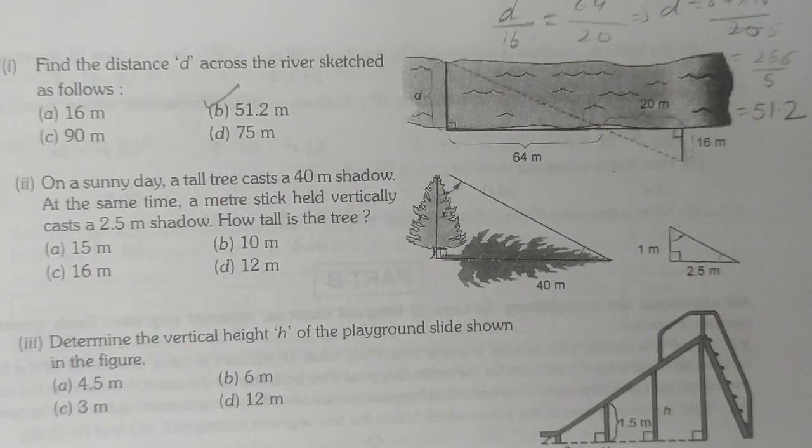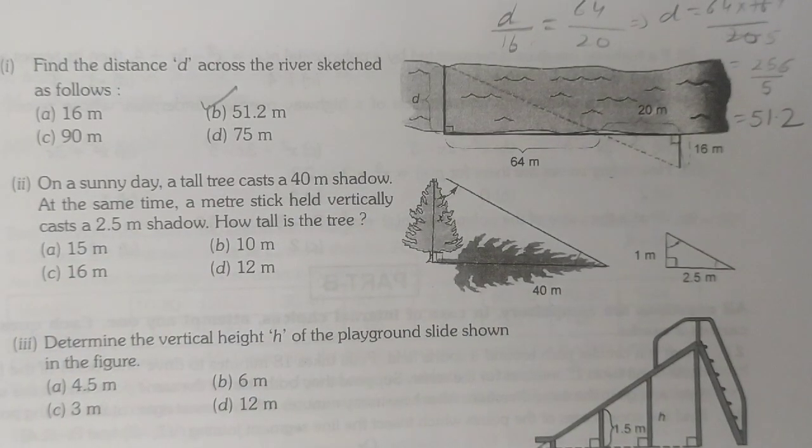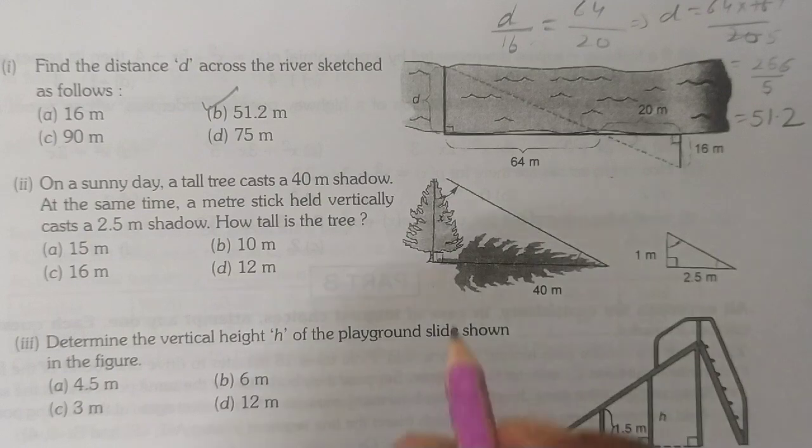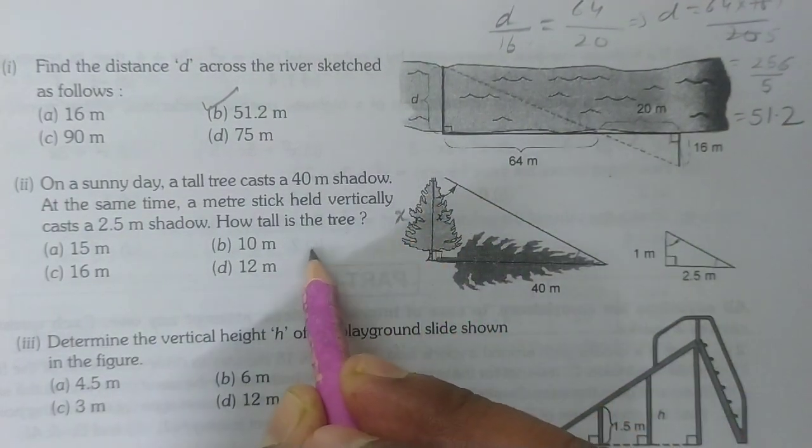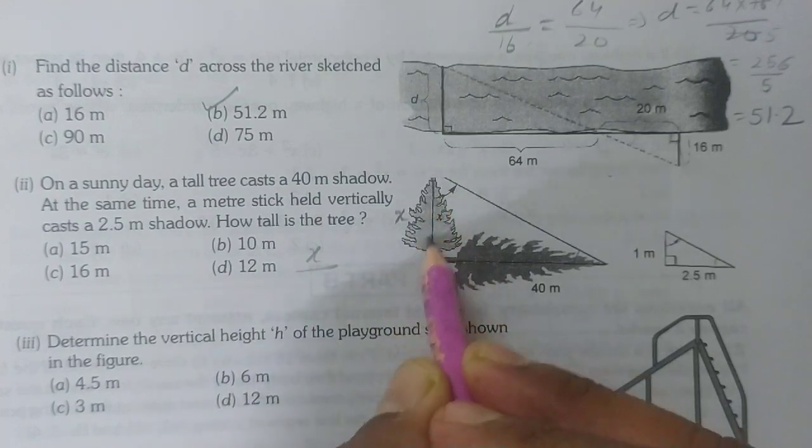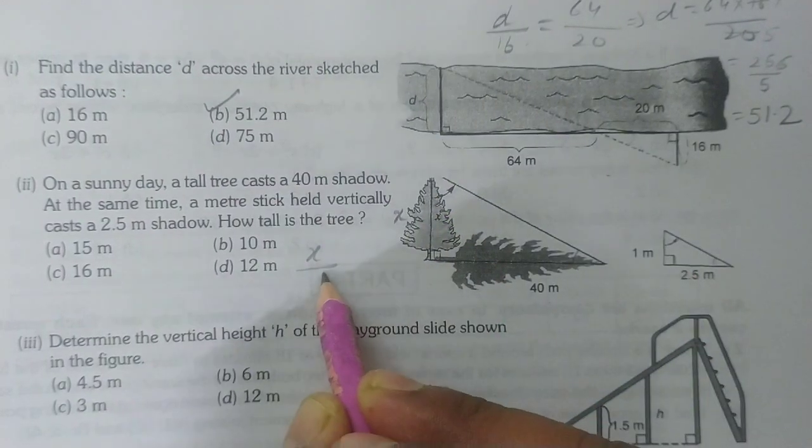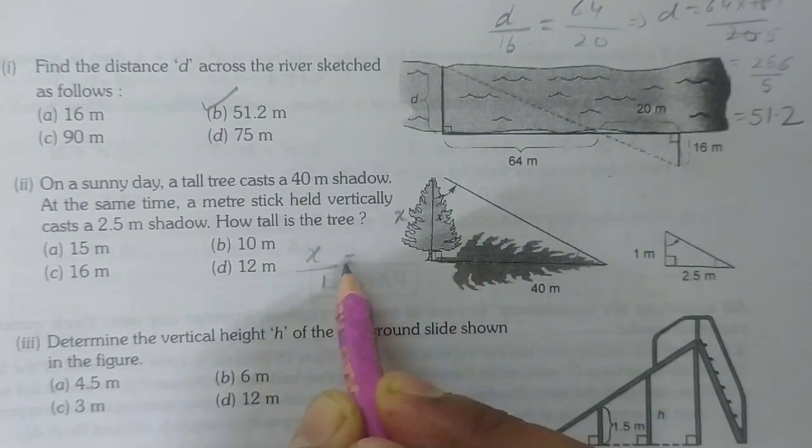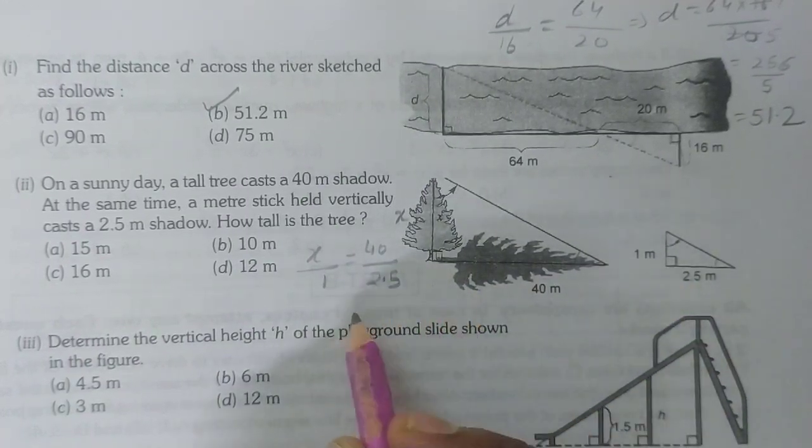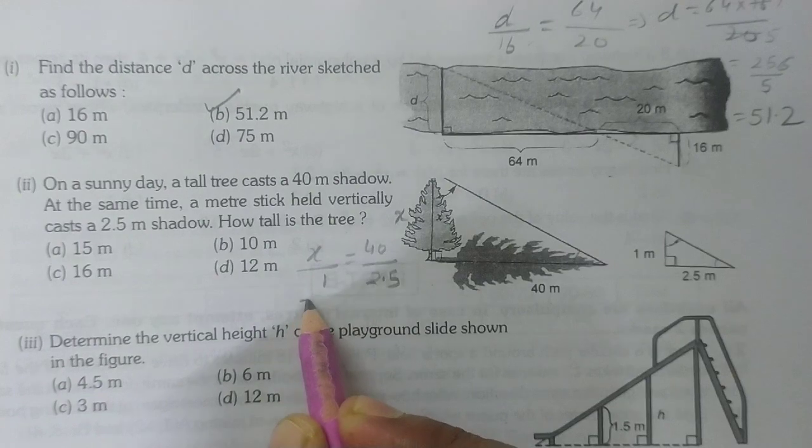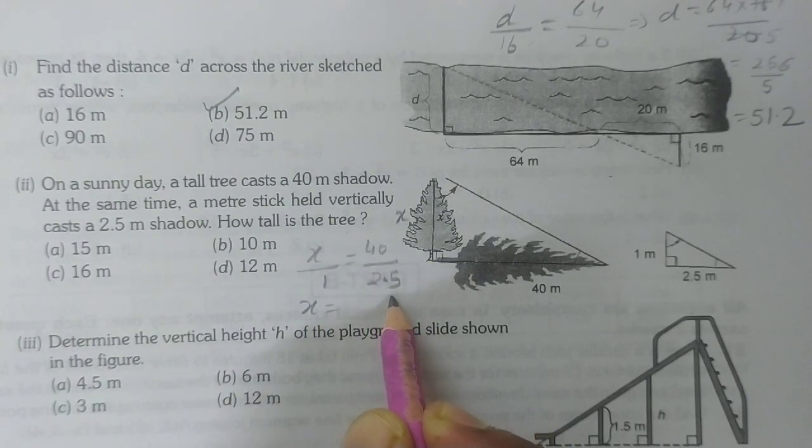By CPST we can equate the ratio of sides. Let the tree's length be x. So x over 1 equals 40 over 2.5. Cross multiply: x equals 40 over 2.5.